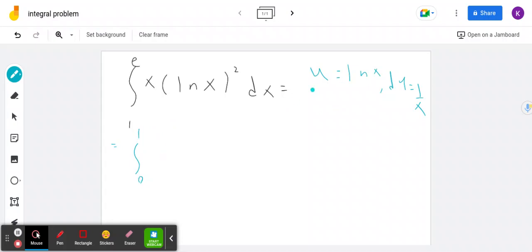And then we get x squared. But we know that u is ln of x, so x is e to the u. So e to the u squared is basically e to the 2u.